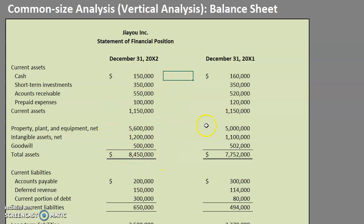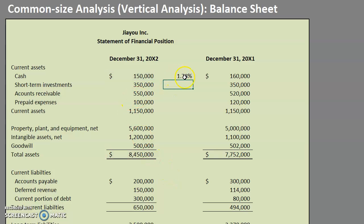Let's start by doing the total assets for this one. I want to know how much this line item is as a percentage of this line item right here. We can see that our cash makes up 1.78 percent of the total assets value. This vertical analysis is nice because it gives us a breakdown of essentially how much of our total assets each line item is eating up.